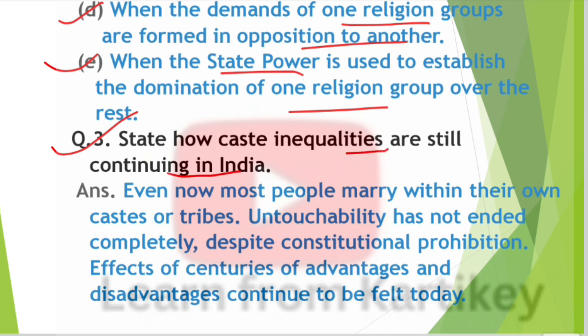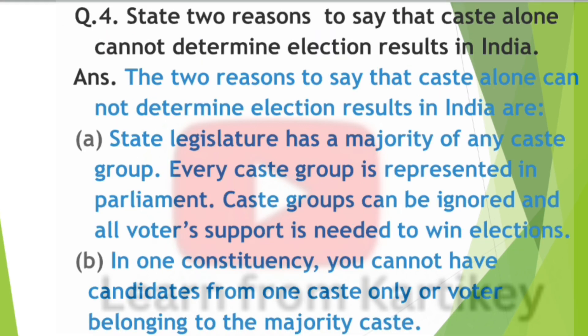Question number 3: State how caste inequalities are still continuing in India. Even now most people marry within their own caste. Untouchability has not ended completely despite constitutional prohibition. Effects of centuries of advantage and disadvantage continue to be felt today.